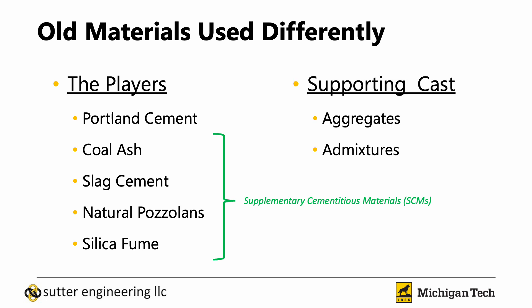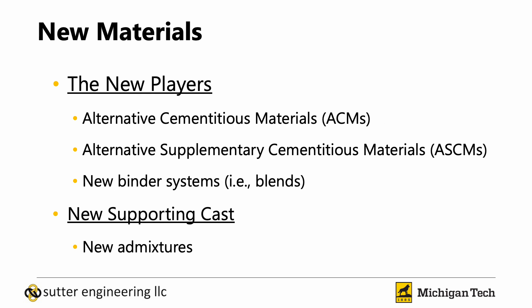We also have aggregates and admixtures in our concrete, which play an important role in understanding how these materials operate together. The new materials we're talking about are alternative cementitious materials and alternative supplementary cementitious materials. We're going to start using these in different combinations — rather than straight Portland cement or binary mixtures, we'll look at more complicated mixtures, and admixtures are going to become even more critical as new admixtures will need to be developed.